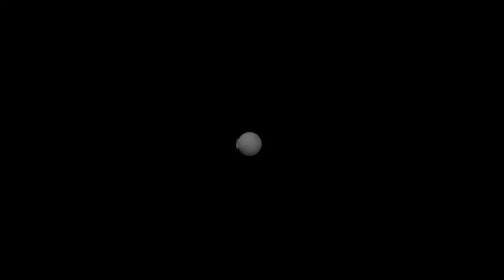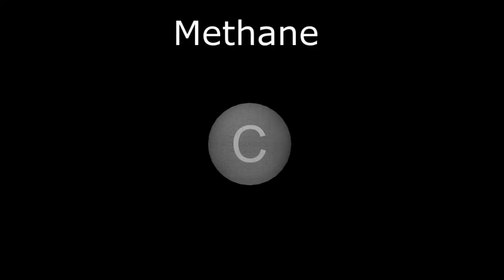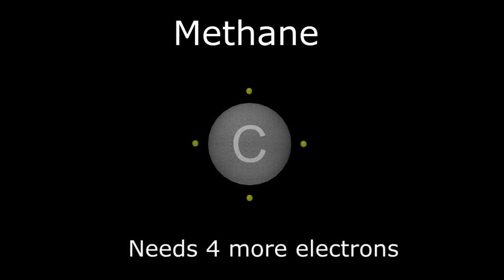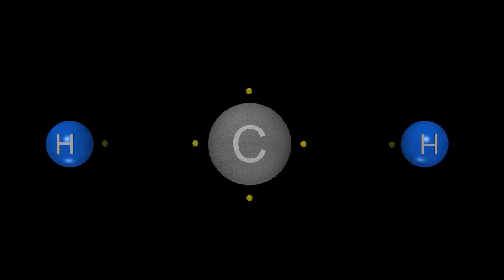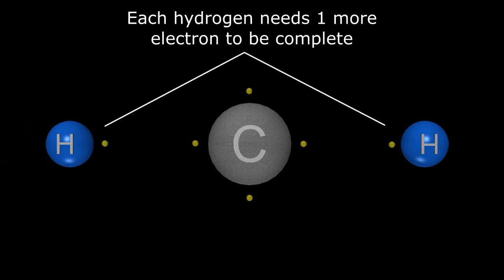The simplest hydrocarbon, methane, consists of a central carbon atom with 4 valence electrons, requiring 4 more electrons to complete its unfilled orbitals, which is attached to 4 hydrogen atoms with 1 valence electron, each requiring 1 additional electron to complete its unfilled subshell.